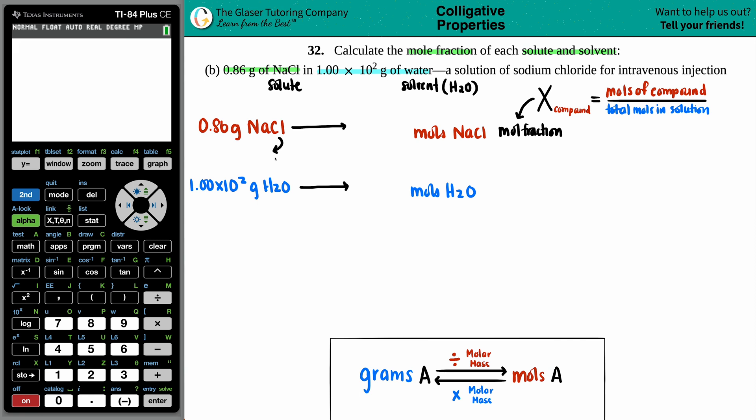So I just have to get the molar mass of NaCl and H2O. NaCl, looking on the periodic table, Na is 22.99, you can round that to 23 if you want. And then I'm going to add chlorine, which is 35.45. So 22.99 plus 35.45, I get 58.44.